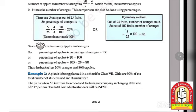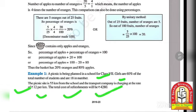Now let's look at Example 1. A picnic is being planned in a school for Class 7. Girls are 60% of the total number of students and there are 18 girls. The picnic site is 55 km from the school, and the transport company charges ₹12 per kilometer. The cost of refreshment will be ₹4280.